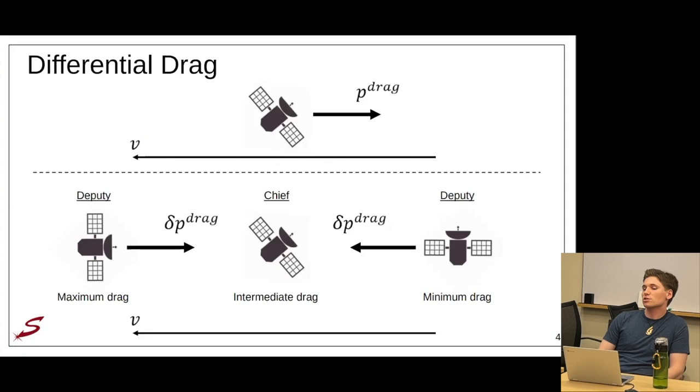As a visualization, differential drag in its most basic form looks like this, where you have a single spacecraft, its direction of motion, and the deceleration of the spacecraft due to atmospheric drag in the opposite direction. When considering multiple spacecraft with a chief and deputy setup, you can put the spacecraft in a differential attitude setup, which creates a relative acceleration between the spacecraft in the positive or negative tangential direction.